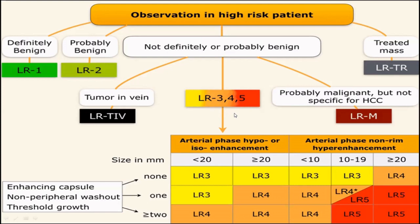For LR-3, LR-4, and LR-5 categories, we assess: first, arterial phase enhancement — whether hypo-, iso-, or non-rim type hyperenhancement; second, size of the lesion; and third, three additional features — enhancing capsule, non-peripheral washout, and threshold growth. When the lesion shows arterial phase hyperenhancement, is 2 cm or greater in size, and has any one of these three features — enhancing capsule, non-peripheral washout, or threshold growth — that is sufficient to diagnose HCC as LR-5.